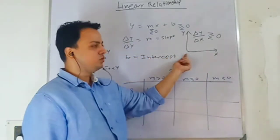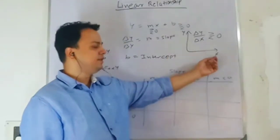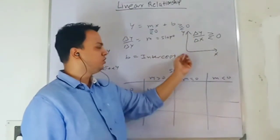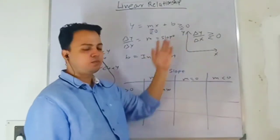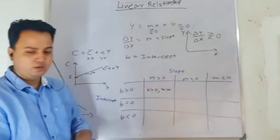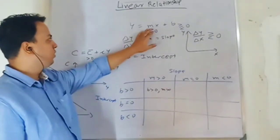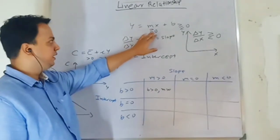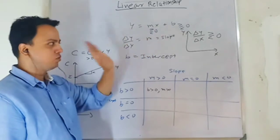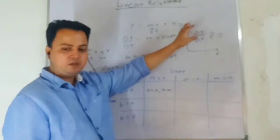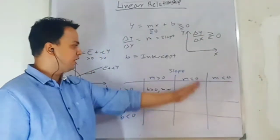To find the y-intercept, set x equal to 0 and you will get the intercept on the y-axis. To find the x-intercept, set y equal to 0. We will be looking at the y-intercept. Now, slope can be greater than, equal to, or less than zero — it can be positive, negative, or zero. Similarly, the intercept can be positive, negative, or zero, starting from the origin.